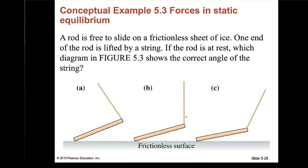Next example: a rod is free to slide on a frictionless sheet of ice. One end of the rod is lifted by a string. If the rod is at rest, which diagram — A, B, or C — shows the correct angle of the string? Please pause the video and find the answer before continuing.